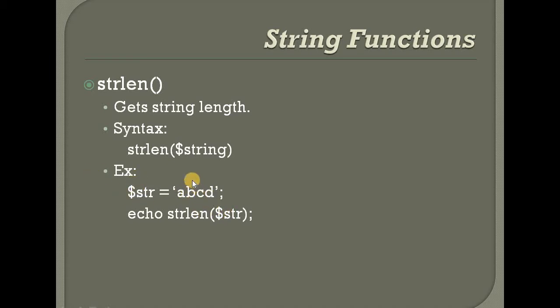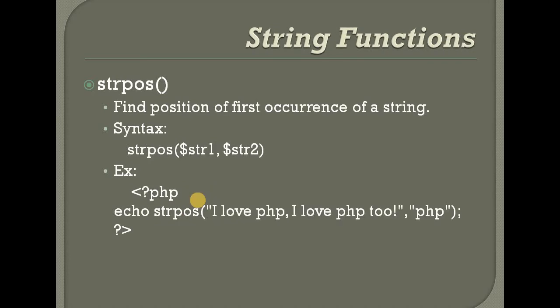The string has characters: one, two, three, four. Next, strpos — string position. This function is used to find the position of the first occurrence of a string.